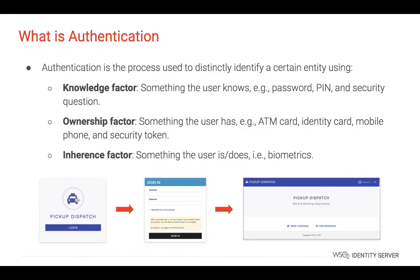Authentication is the process of distinctly identifying a certain entity using a knowledge factor, an ownership factor, and an inheritance factor. The knowledge factor is something the user knows, such as a password, a PIN, or a security question. The ownership factor is something the user has, such as an ATM card, identity card, mobile phone, or a security token. The inheritance factor is something the user is or does, such as biometrics.